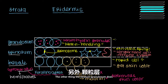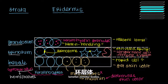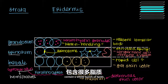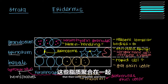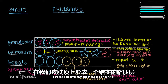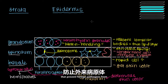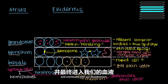The stratum granulosum also releases things called lamellar bodies. These lamellar bodies contain a whole bunch of lipids that come together and form a strong lipid layer at the top of our skin. This lipid layer is impermeable — it gives the skin its watertight capabilities that prevent foreign pathogens from making their way deeper into our skin and eventually into our bloodstream.